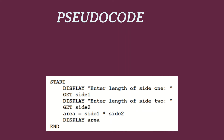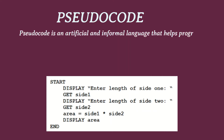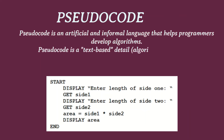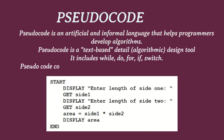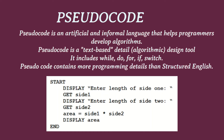Pseudocode is an artificial and informal language that helps programmers develop algorithms. It is a text-based design tool that includes constructs like while, do, for, if, and switch. Pseudocode contains more programming details than structured English.